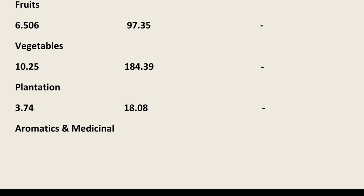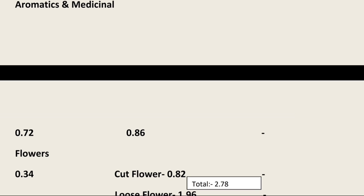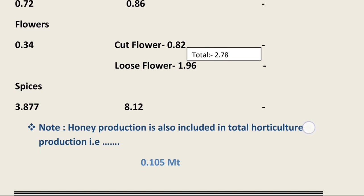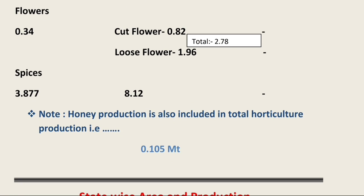In terms of aromatic and medicinal crops, total area is 0.72 million hectare and total production is 0.86 million ton. In terms of flowers, the total area including cut and loose flowers is 0.34 million hectare and total production including cut and loose flowers is 2.78 million ton.